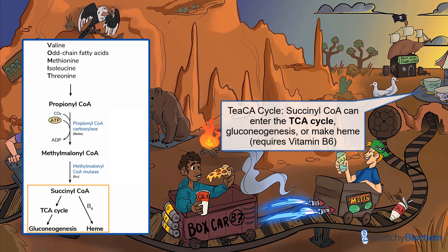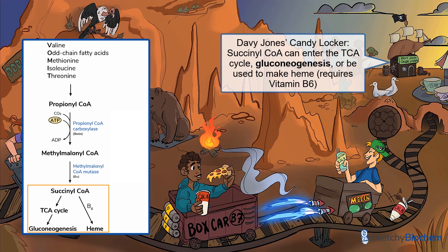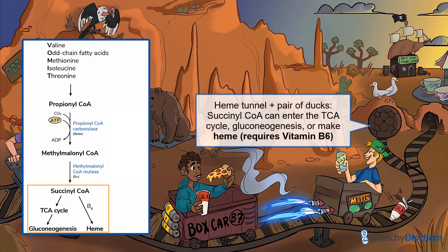As you probably already know, succinyl-CoA can enter the TCA cycle to eventually make ATP. If you follow that dark, mysterious tunnel, eventually you'll get to the TCA cycle ride. Alternatively, when blood glucose levels are low, succinyl-CoA may be used to make glucose via gluconeogenesis — but keep in mind it still has to enter the TCA cycle and get converted to oxaloacetate first. For more information, please watch our TCA cycle and gluconeogenesis sketches. Last but not least, succinyl-CoA is a precursor to heme, hence the pathway leading to heme tunnel. The pair of ducks overlooking the heme tunnel will help you remember that we also need vitamin B6.